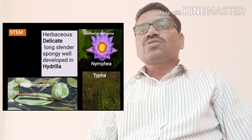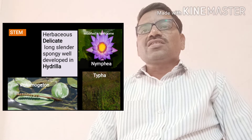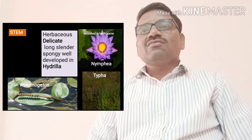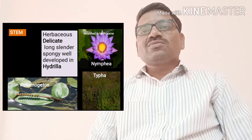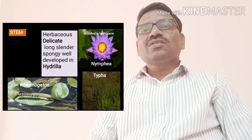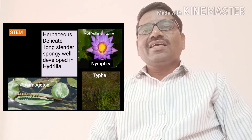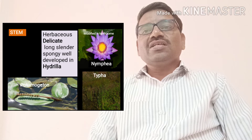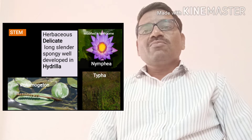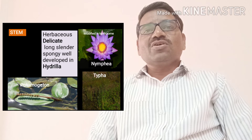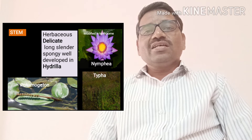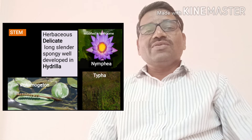When you switch over to the stem, in such hydrophytes, most of them show a herbaceous stem — delicate, long, slender, and spongy — well developed particularly in Hydrilla. But in some plants, the stem is modified into a rhizome. The best examples are Nymphaea and Typha.